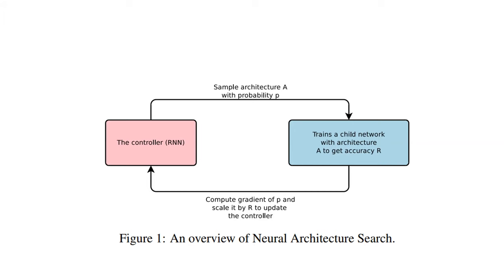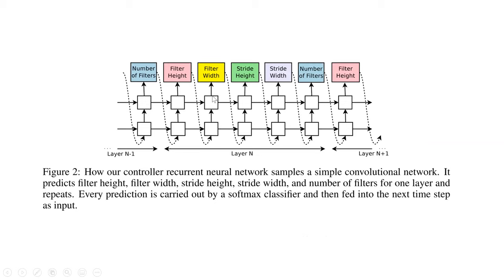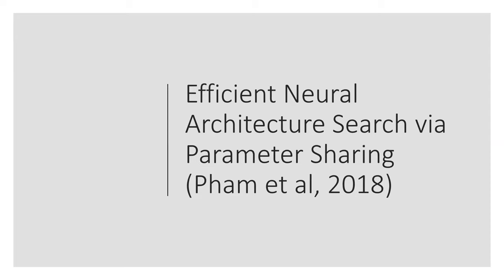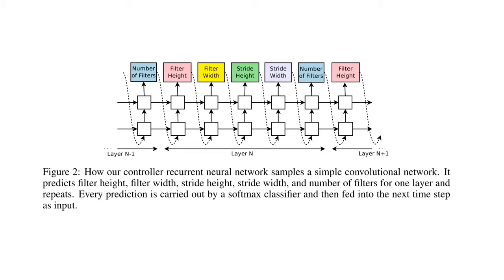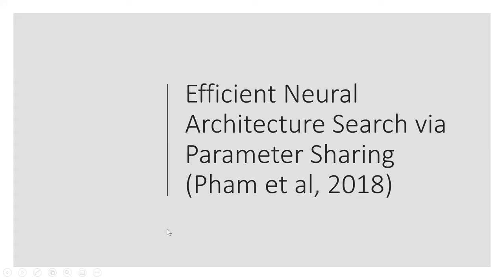This is an example of the controller unrolling to sample the parameters which define an architecture: I sample a convolutional layer, then sample the number of filters, filter height, width, stride, and so on. As I unroll, it just tells me what the parameters are. I'm going to show you results after we see this — you might be curious about how well these things do, but we will get back to that. Let's get through this paper and then come back to that.